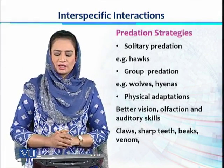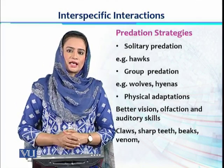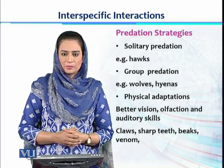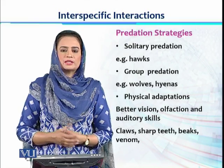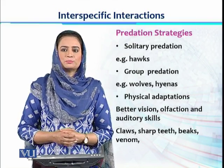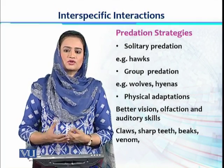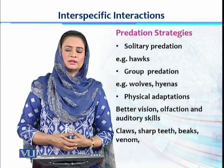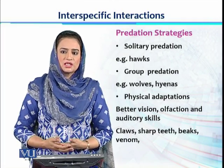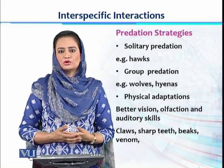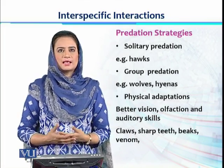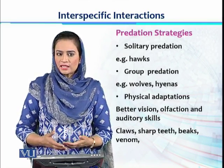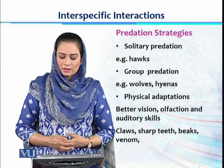Along with the foraging cycle, there are additional predation strategies that animals follow for capturing prey. Some animals are solitary predators — a single animal completes the entire foraging cycle alone. A common example is the hawk, which searches for and captures prey solitarily. On the other side, there are species that find their prey in groups. For example, wolves, hyenas, and lions all work as a team, completing all the steps of the foraging cycle in group form.